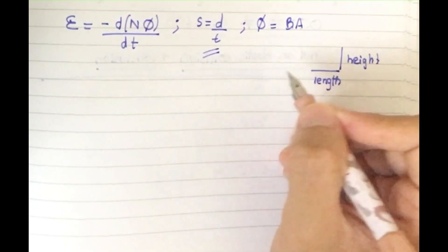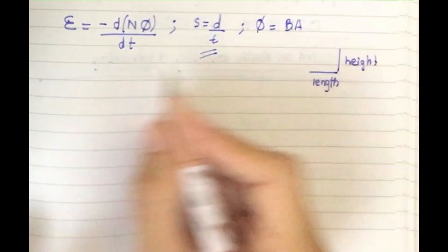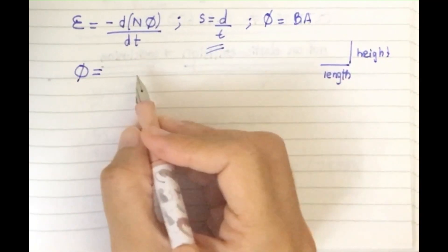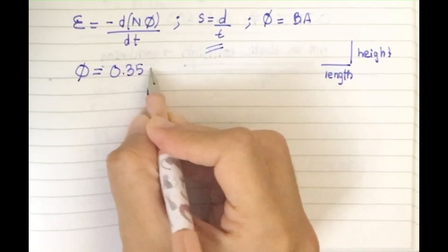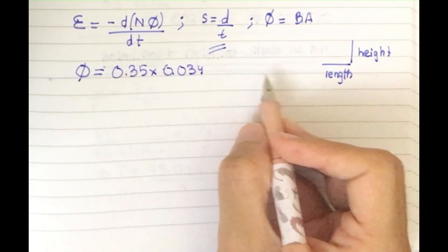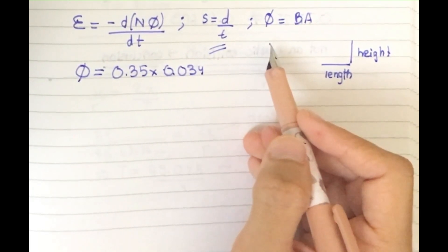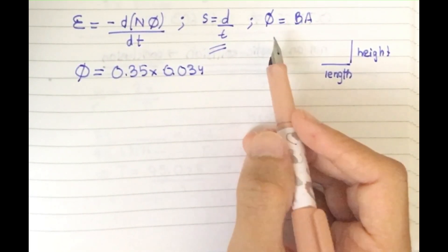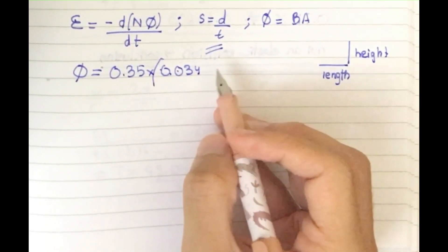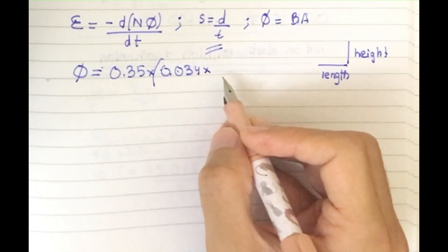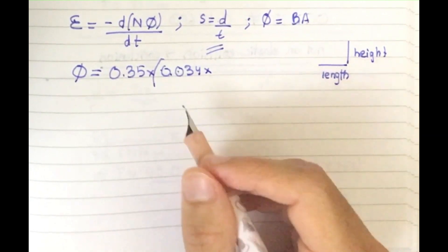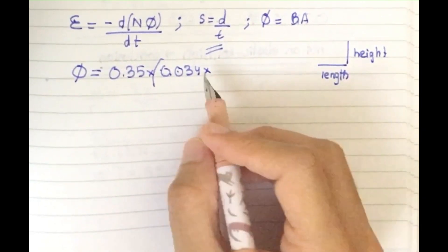Let's find the magnetic flux, which is equal to 0.35 times 0.034 times 0.02. B was given as 0.35, and A is area. Area is not given to us, so we calculate it by multiplying the height and the length. It is in millimeters, so we divide by 1000, which gives 0.034 and 0.02.